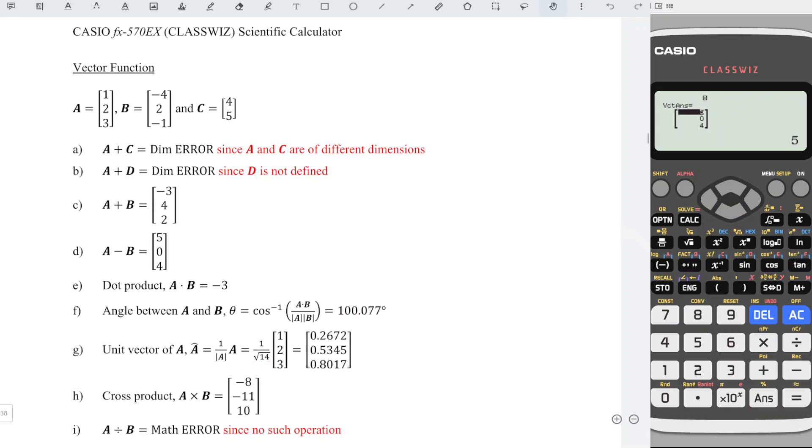For dot product, press Option, vector A, Option, down to get dot product, Option, vector B, and we should obtain the correct value.